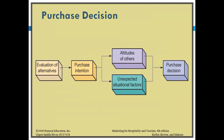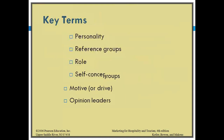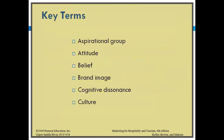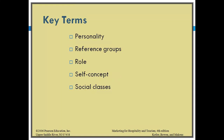We need to understand the buyer decision process: need recognition, information search, evaluation of alternatives — small room or big room, different packages, room service — purchase decision, and post-purchase behavior of the customer. Key terminologies include aspirational groups, attitudes, beliefs, brand image, family life cycle, learning, lifestyle, membership groups, motive, personality, reference groups, roles, self-concept, and social classes.